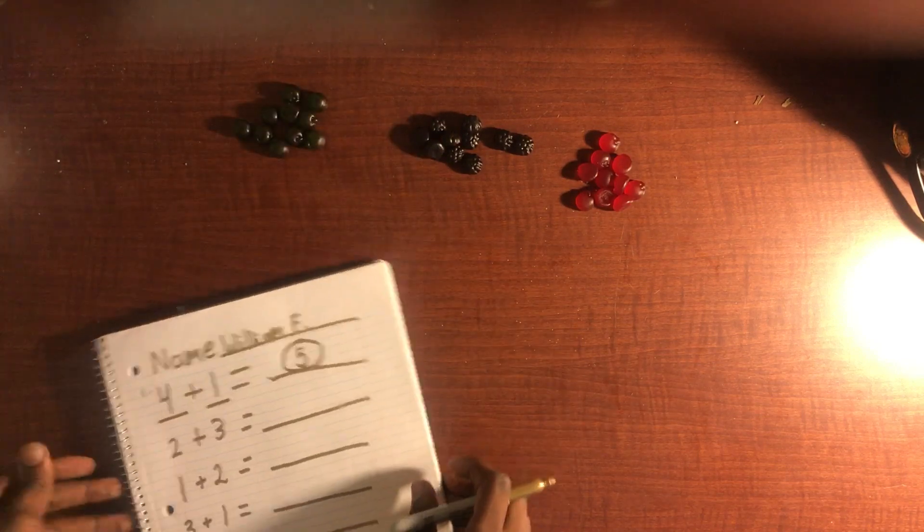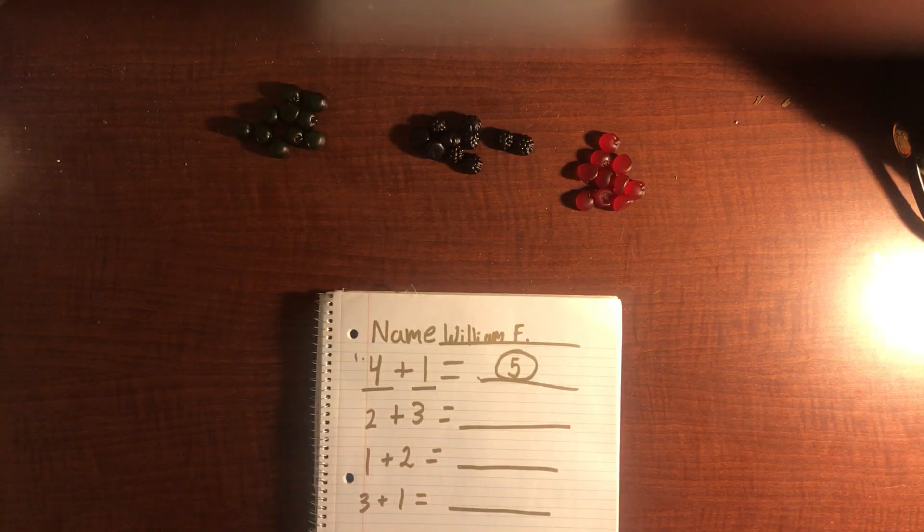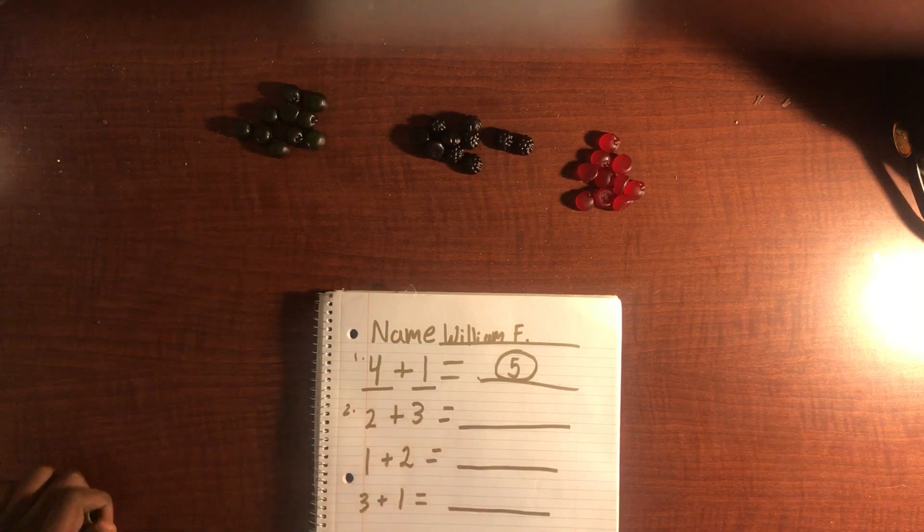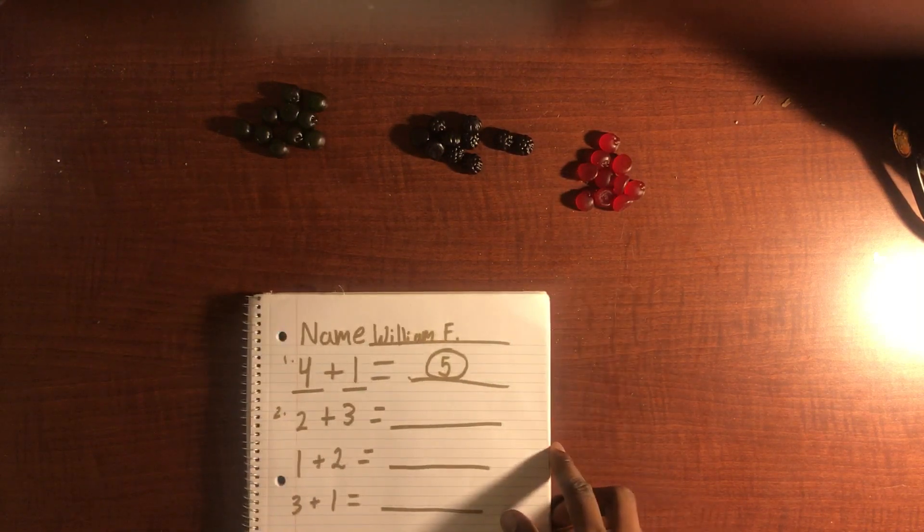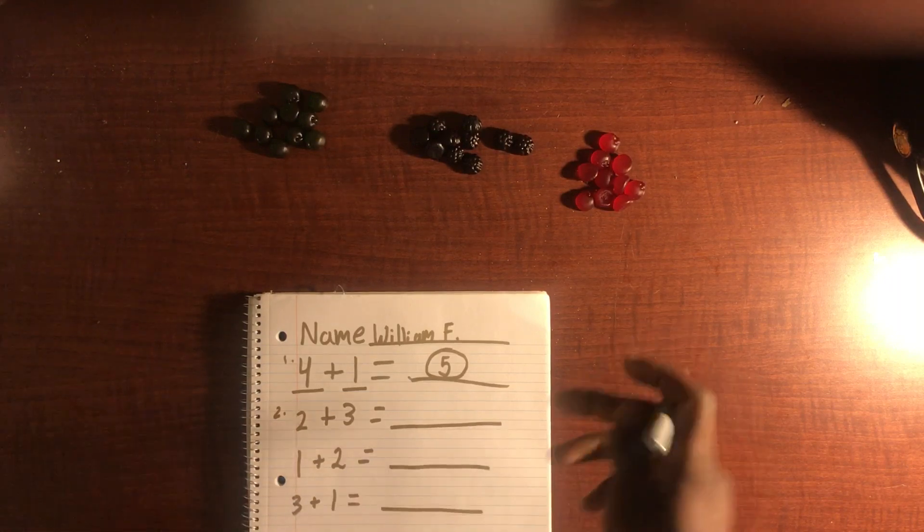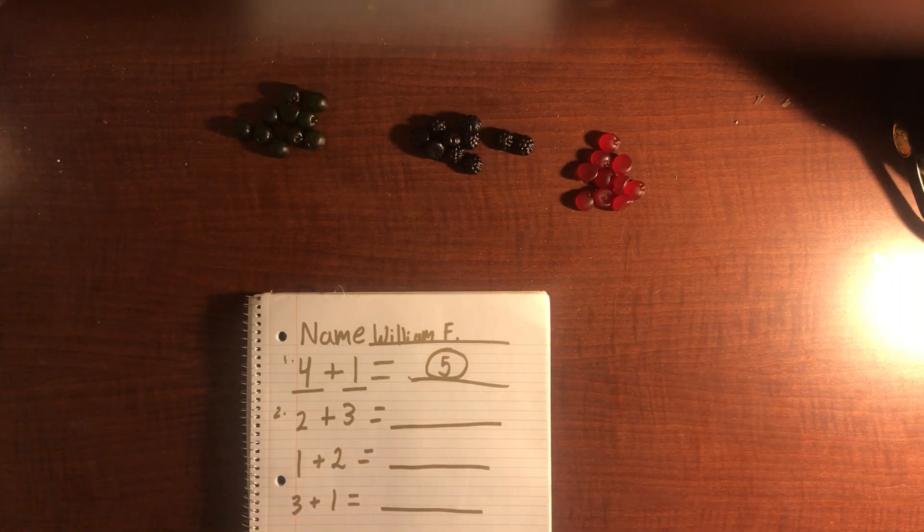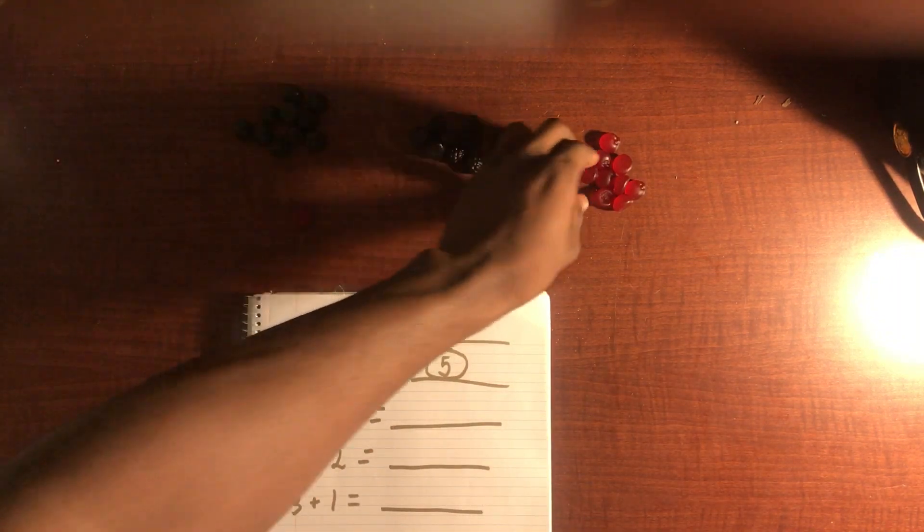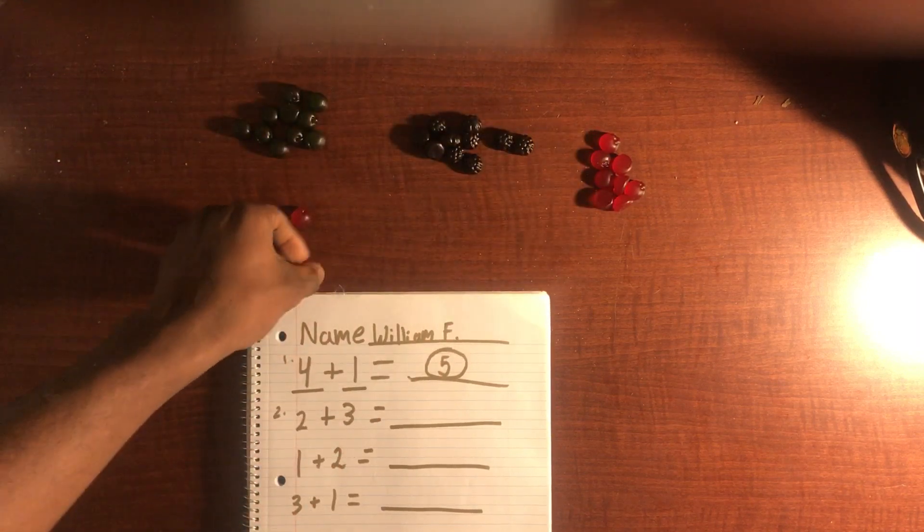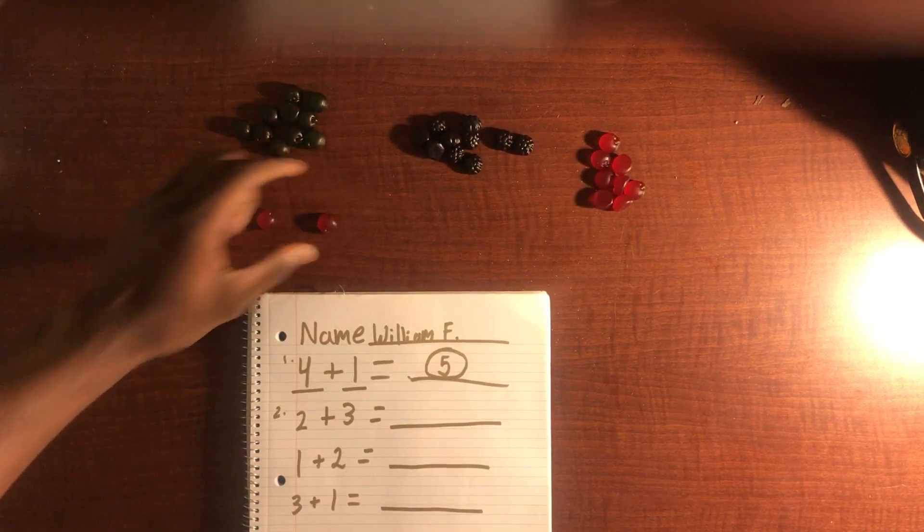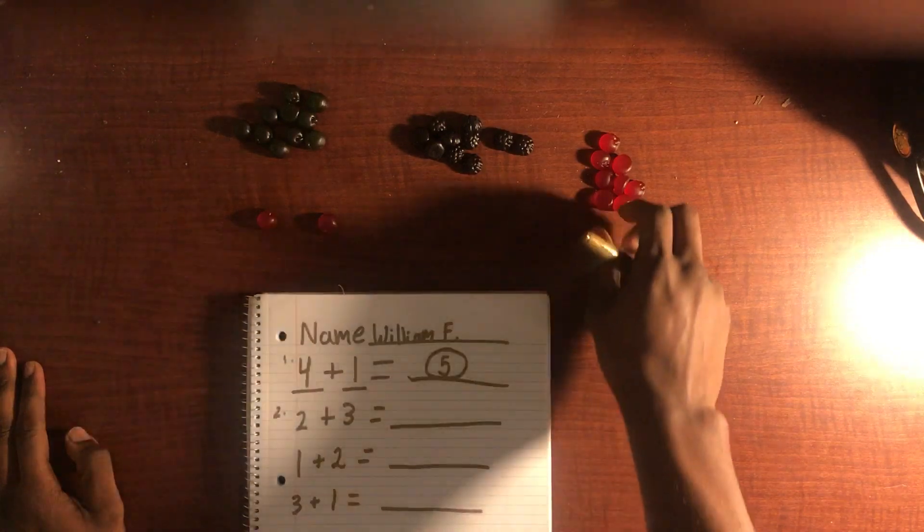Let's move on to our next one, number two. So number two, we have two gummies. Let's go ahead and use red this time. We have two red gummies and if we were to add - we have two red gummies, if we were to add three more.